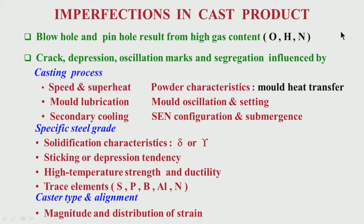That is why when you are doing primary steel making, your dissolved oxygen is as high as maybe 500 or 600 ppm. If you want to cast that steel, your steel will be like a strainer because so much oxygen is dissolved — they will all try to come out as gas.